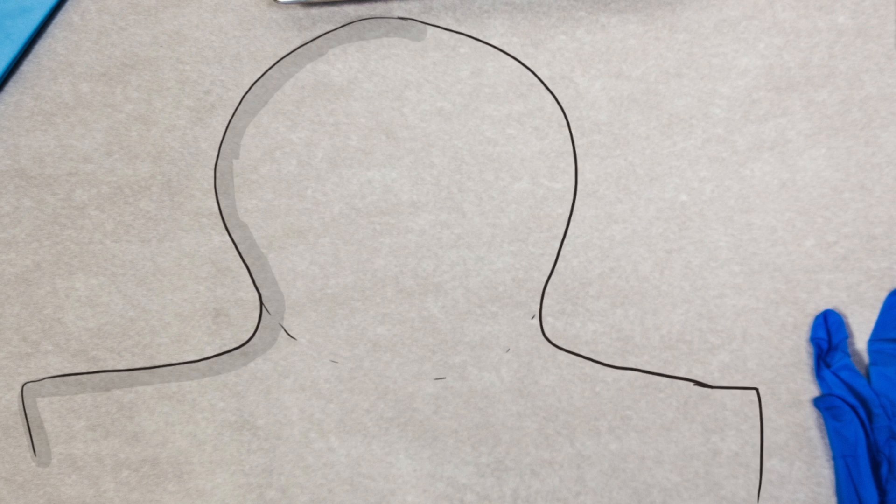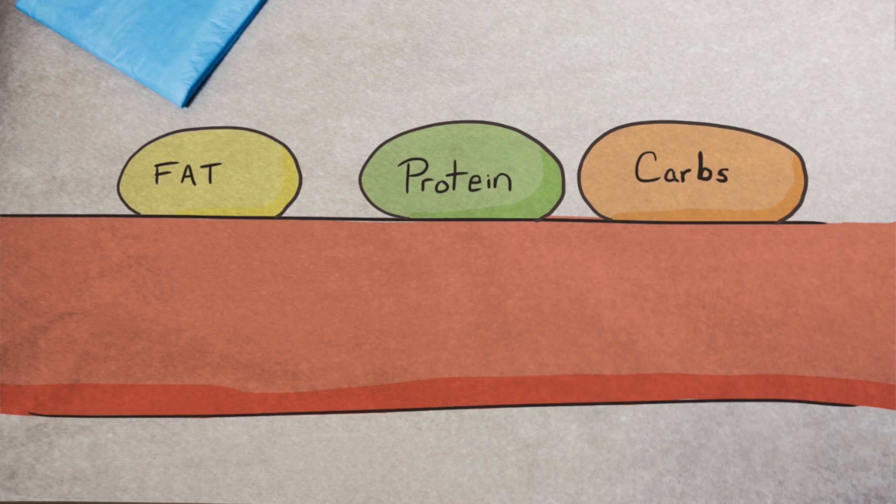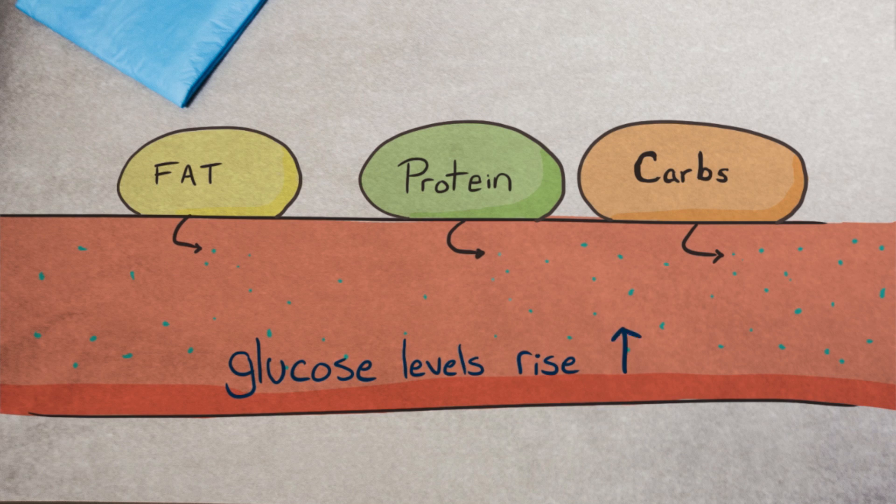It works like this. You want to get sugar to your brain, the most important thing, right? So the hormone stimulates the breakdown of fat, protein, and carbs into usable energy in the blood. And that means your blood glucose levels rise.